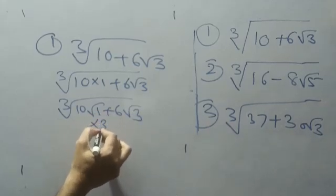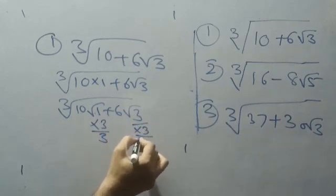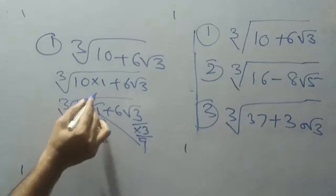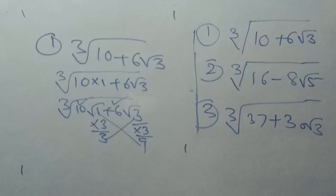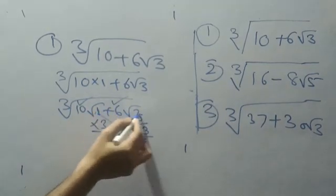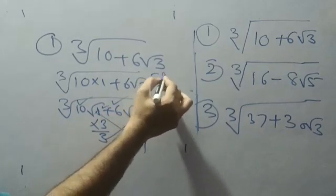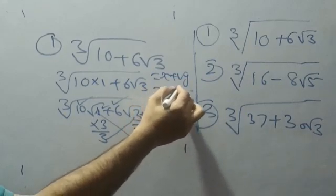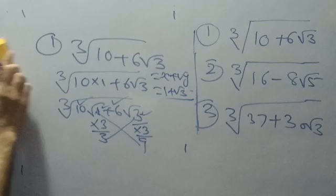Now take the numbers in the root. This 1, you multiply with 3. This 3, also multiply with 3. Now see the condition: 9+1=10, you are getting. 3+3=6, you are getting. Now condition is satisfied. What is the answer? The values which are in the root, those are the values of x and y. So x=1 and y=3. So the answer is 1+√3.